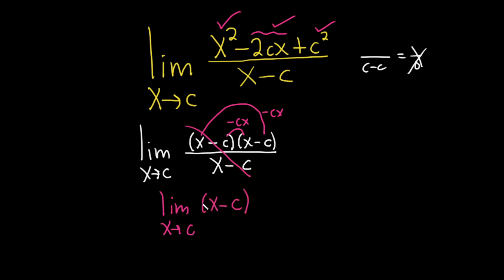At this point, we can actually plug in the c and there's no issues with dividing by 0. Recall that whenever you plug in the number for a limit, you drop the limit sign. Now we'll replace the x with a c. So c minus c, and that's equal to 0. That would be the answer.